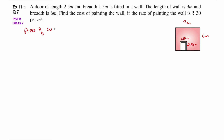पहले area निकाल लेते हैं. Area of wall = length × breadth, so 9 को 6 के साथ multiply करो. 9 × 6 = 54, so area of wall = 54 meter square.